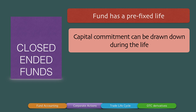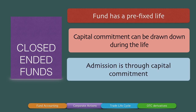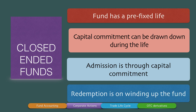The capital commitment can be drawn down during the life of the fund, so capital is not a one-time investment by the limited partner. This is very important to understand in the case of closed-ended funds. Admission into the fund is through this capital commitment. The asset management company can draw down the committed capital at any point during the life of the fund — and when I say any point, this is predetermined in the agreement, perhaps on an annual basis or once every three years.